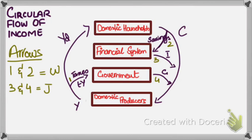This is how income flows in a closed mixed economy. Domestic households spend on domestically produced goods and services, and this generates income. The government takes taxes from this income and spends some of it back to producers in the form of grants and subsidies. Households do not spend all of their income on consumption — they save some of it in the financial system, the banks — and the banks then lend loans, and that forms investment.